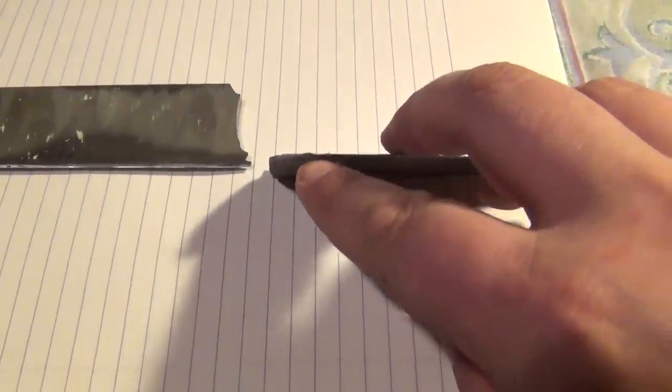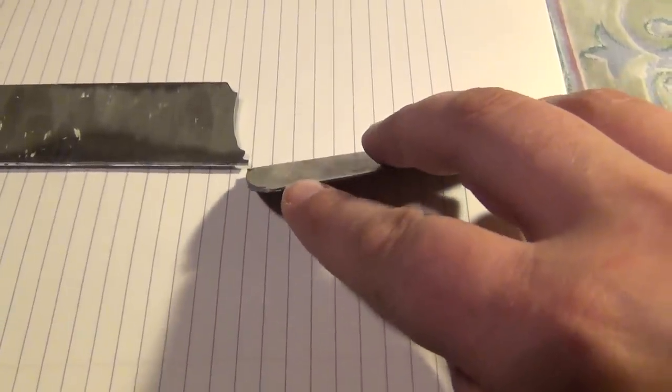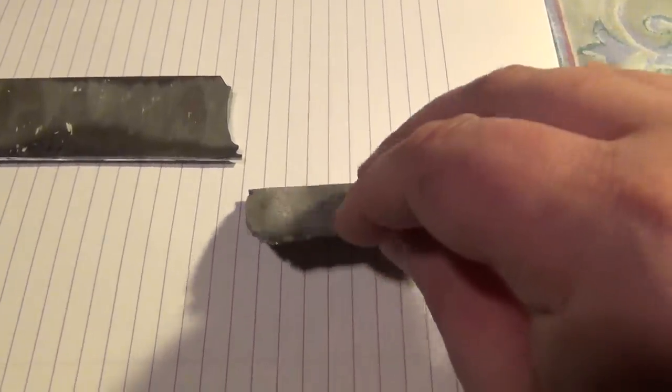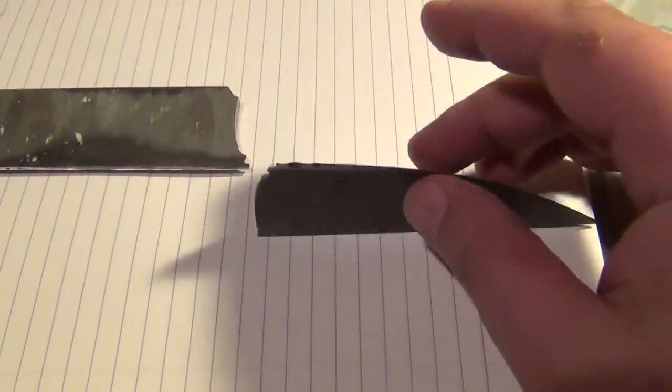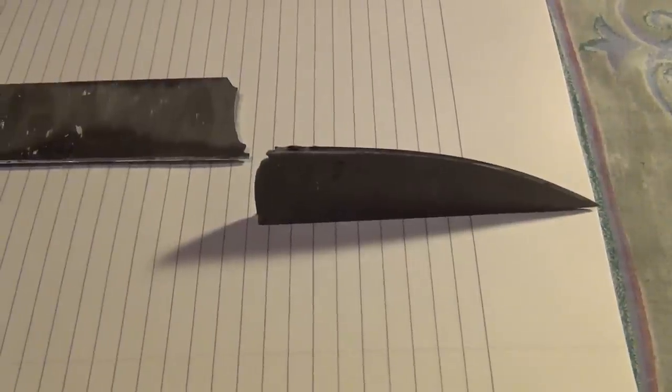What is even more surprising is if you look at the edge bevel, it's actually turned in a number of spots. First thing I thought was, I must have hit a nail in the piece of wood, because it isn't uncommon here for people to spike wood, because they're idiots.